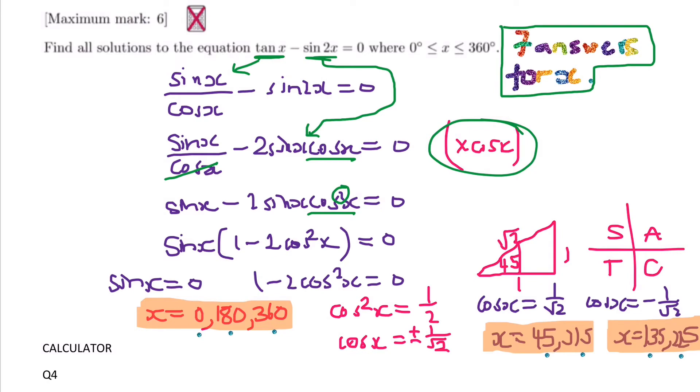So I'm going to factorize because I can see a common factor of sin. So sin x bracket 1 minus 2 cos squared x because I factorized. Then using the null factor law, which we've talked about many times, if you've got two things multiplied together which equals 0, you can split them.